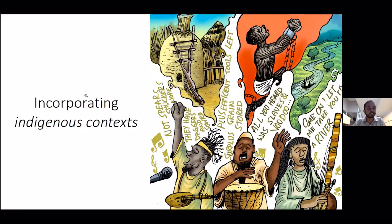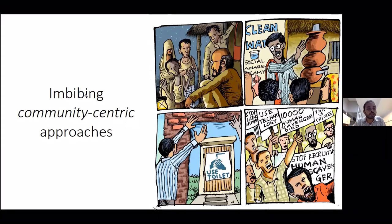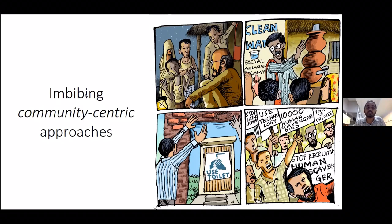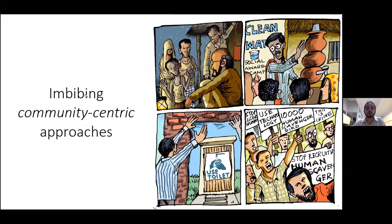This is a key learning: incorporating indigenous context can make messaging and science communication much more relevant to the local context. Another example is the People's Science Movement in India in the 1960s, started by a group of scientists, social reformers, and activists who traveled around different villages communicating information about health, sanitation, and hygiene.